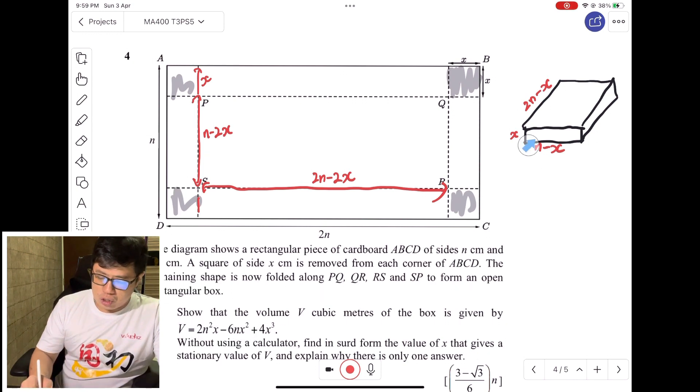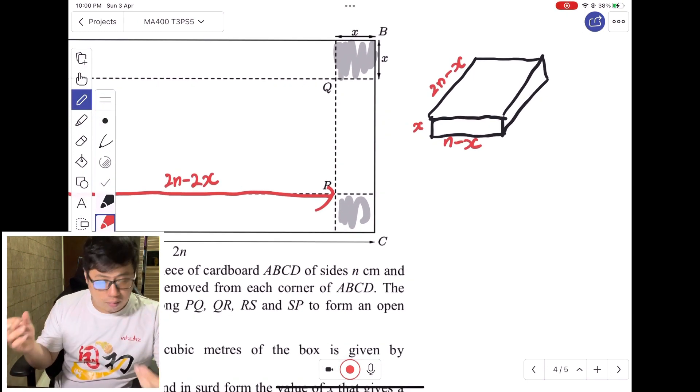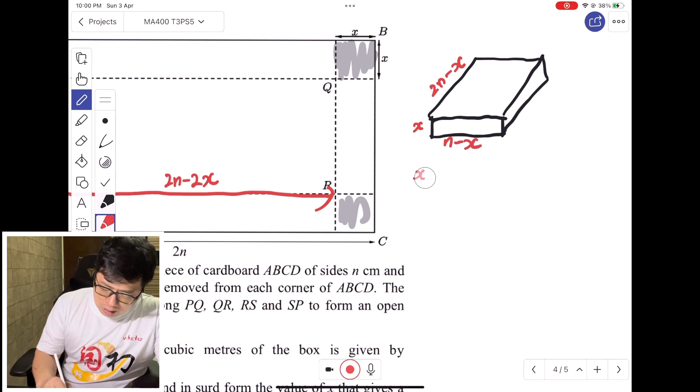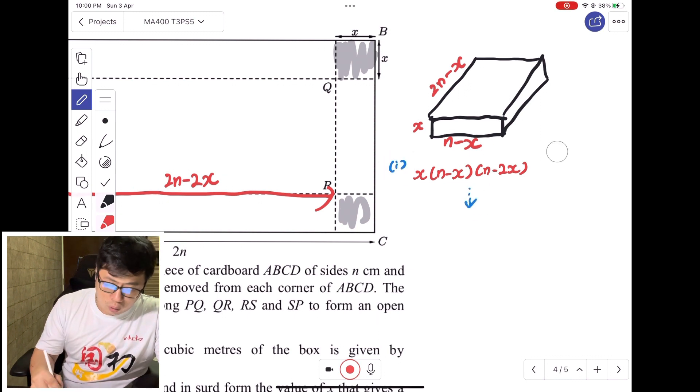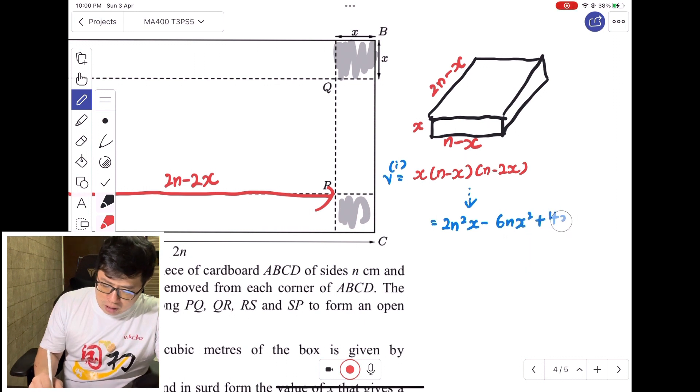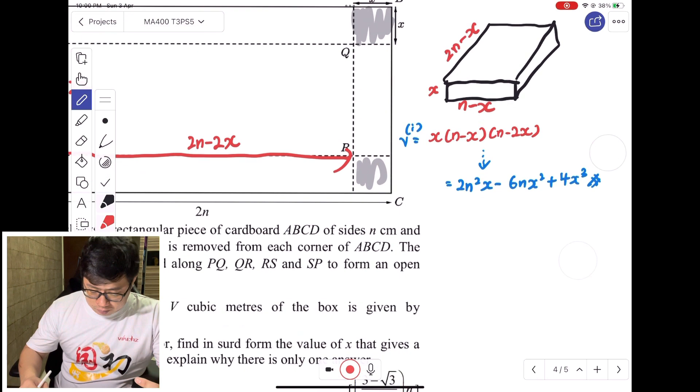This is not too difficult. We have the length, the width, and the height of the box, so we just need to multiply length times width times height: X multiplied by N minus 2X multiplied by 2N minus 2X. This eventually expands to give you the volume V = 2N²X - 6NX² + 4X³, which is shown.